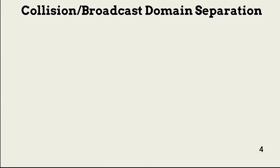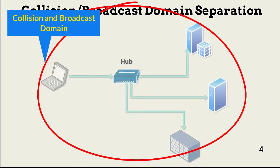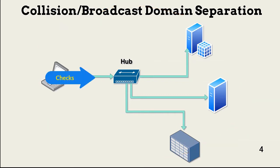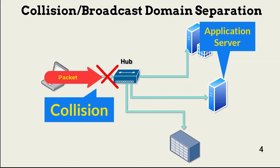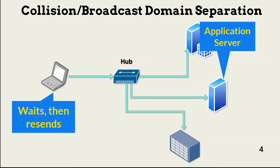When devices are connected to a network via a hub, they are all essentially on the same network segment or collision domain. When the laptop wants to communicate with the application server, it must first check to see if it must wait for other traffic. If the network appears clear, the laptop places the packet for the server on the network. Sometimes the packet collides with other traffic sent from one or more devices also connected to the network. When this happens, the laptop waits a short period, and then it sends the packet again.